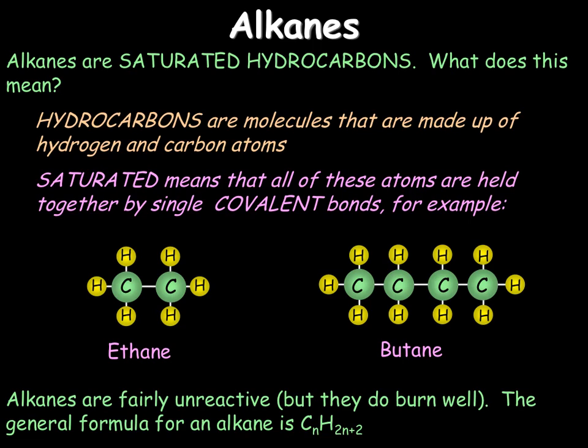The general formula for an alkane is CnH2n+2. This means that as long as we know the number of carbons, we can work out the number of hydrogens.